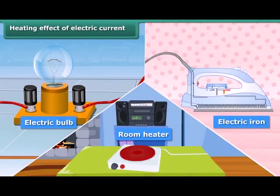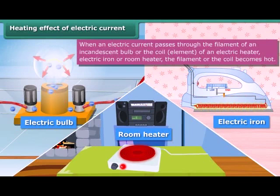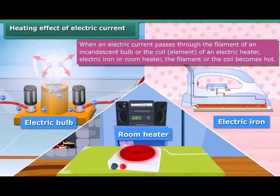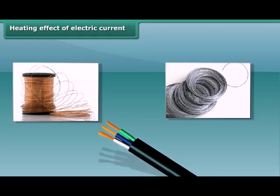When an electric current is passed through a metallic wire — like the filament of a bulb or the coil of an electric heater, geyser, electric iron, or room heater — the coil becomes hot and glowing. This is known as the heating effect of electric current. They radiate heat and light. The amount of heat produced in a wire depends on its material, length, and thickness.